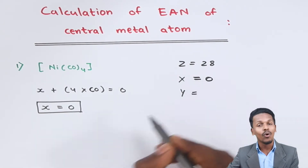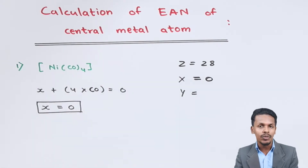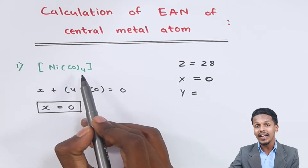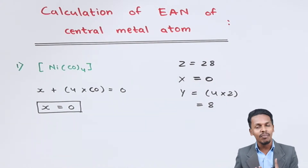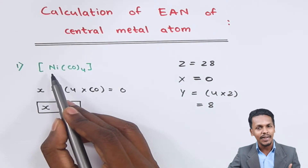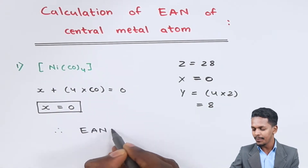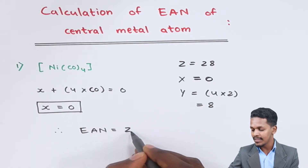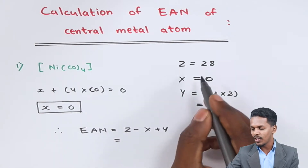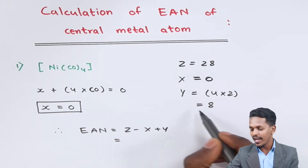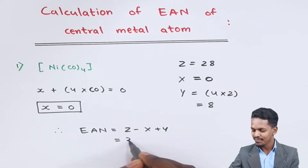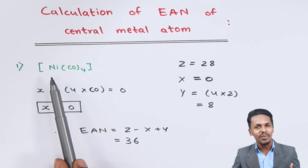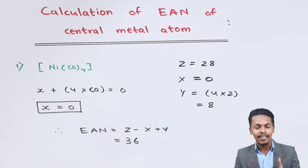Each ligand contributes two electrons to the central metal atom. Here we have four ligands, so Y = 4 × 2 = 8 electrons contributed by the ligands to nickel. Using the formula EAN = Z − X + Y, we get 28 − 0 + 8 = 36.